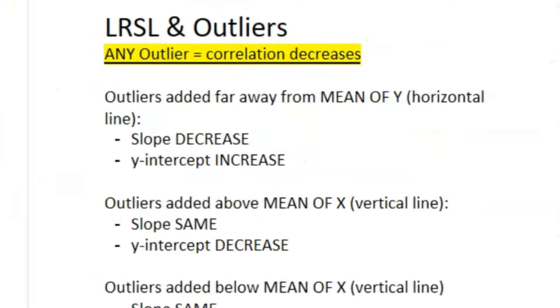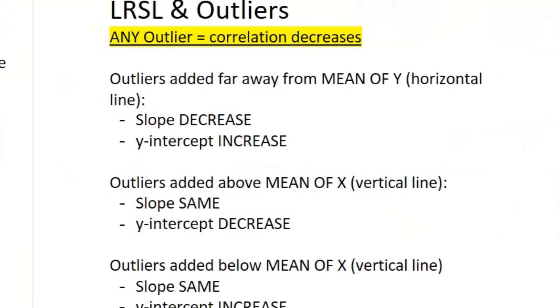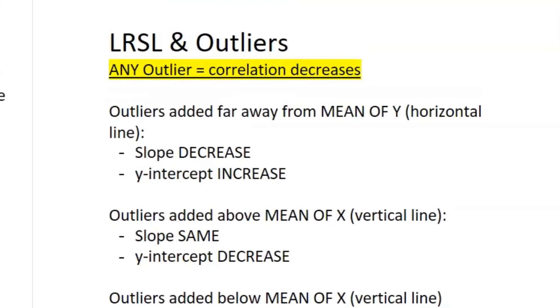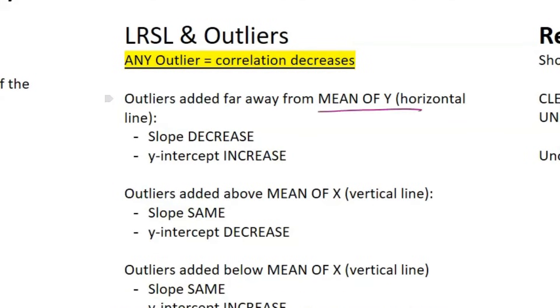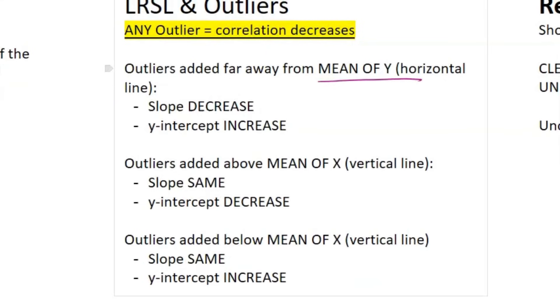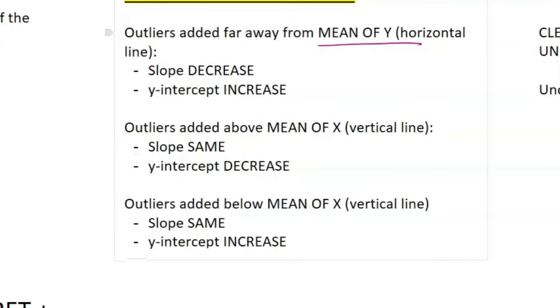Okay, so let's talk about outliers. How do outliers affect your least squares regression line? Any outlier is going to decrease your correlation. Now here's the thing - outliers are added far away from the mean of Y, so that's going to be a horizontal line. That's going to decrease your slope and also increase your y intercept. And the outliers are added above the mean of X, so this case is a vertical line, your slope stays the same, your y intercept decreases. And if it is added below the mean of X of that vertical line, then your slope is going to be the same and your y intercept is going to increase in this case instead of decreasing.